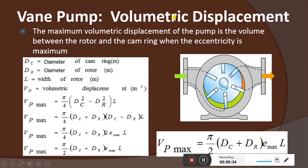Vane pumps volumetric displacement. Last class only we have explained what is volumetric displacement. Volumetric displacement is nothing but the amount of liquid which is going to be pumped per revolution — per revolution, what is the amount of liquid that is going to be pumped — that will be considered as the volumetric displacement.